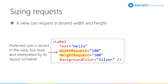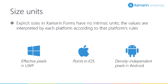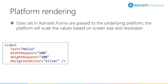The example we just saw used numbers like 100, and notice there are no units on that expression. In Xamarin.Forms there are no intrinsic units — those values get passed to and interpreted by the platform. They'll be interpreted as effective pixels in Windows, points in iOS, or density-independent pixels in Android.